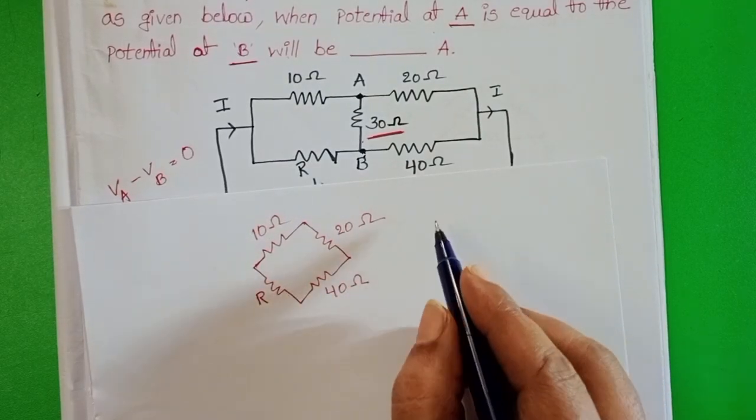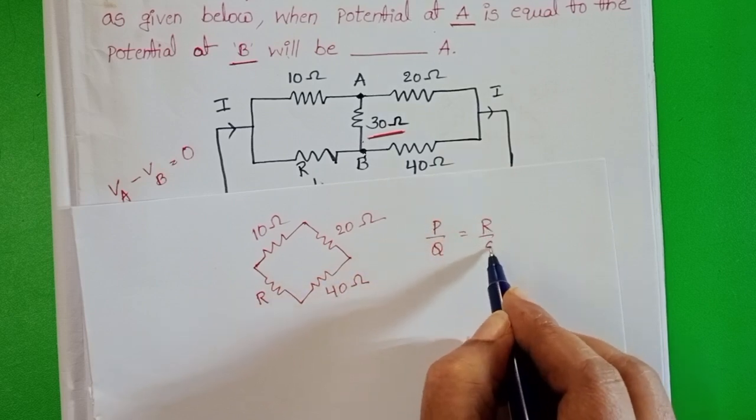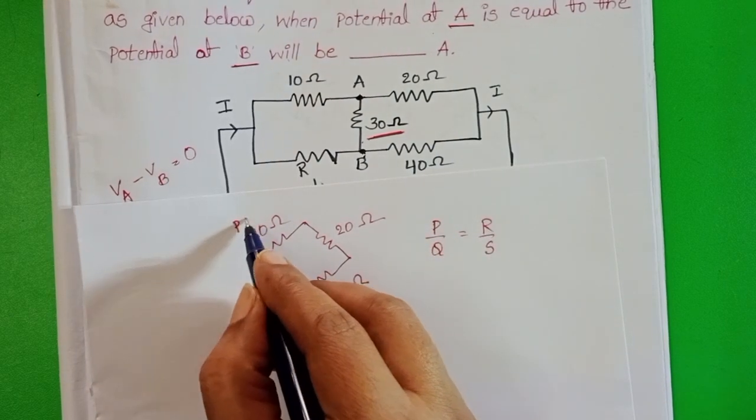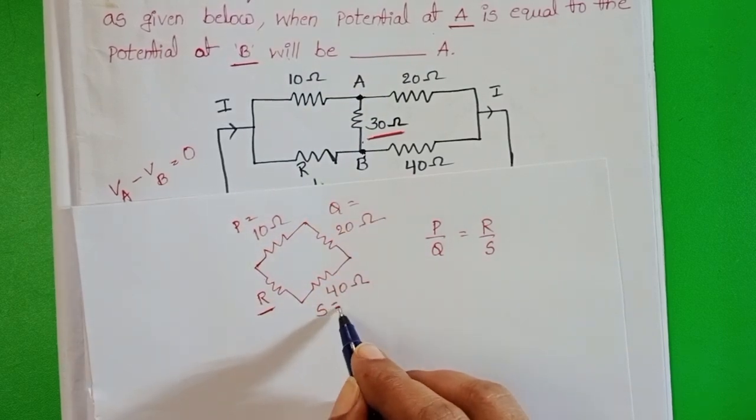The condition of the balanced Wheatstone bridge is P by Q equals R by S. Take this is P, Q, and R is unknown resistor, and this one is S.